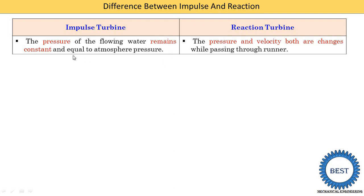The third point is that the pressure of the flowing water remains constant and is equal to atmospheric pressure in an impulse turbine. As mentioned in the first point, at the inlet there is only kinetic energy — not zero pressure, but atmospheric conditions. So throughout the whole impulse turbine the pressure remains constant at atmospheric pressure. In a reaction turbine, both pressure and velocity change while passing through the runners. In a reaction turbine, both pressure energy and kinetic energy are supplied at the input and are partially converted in different components.